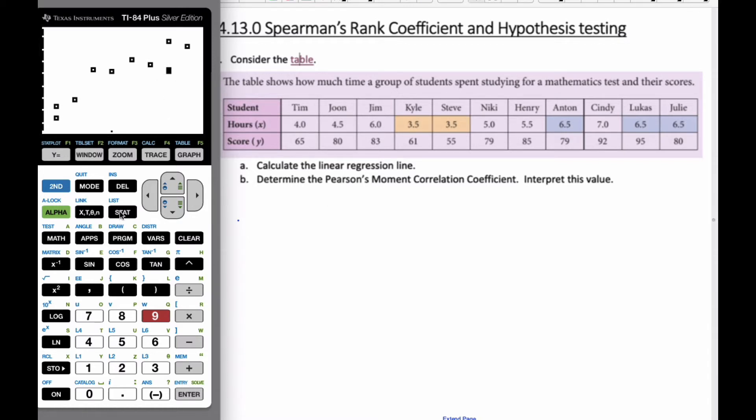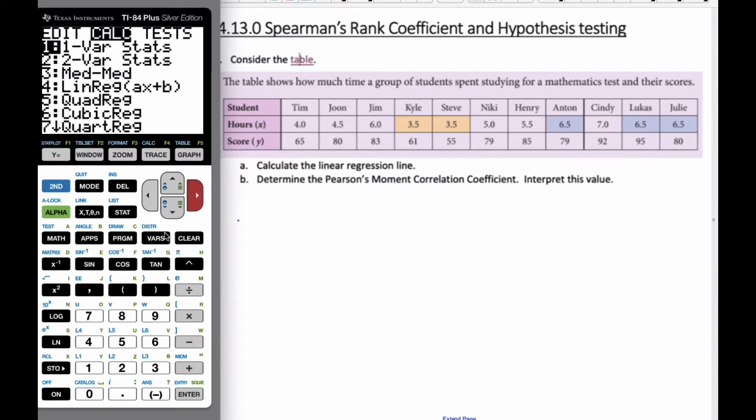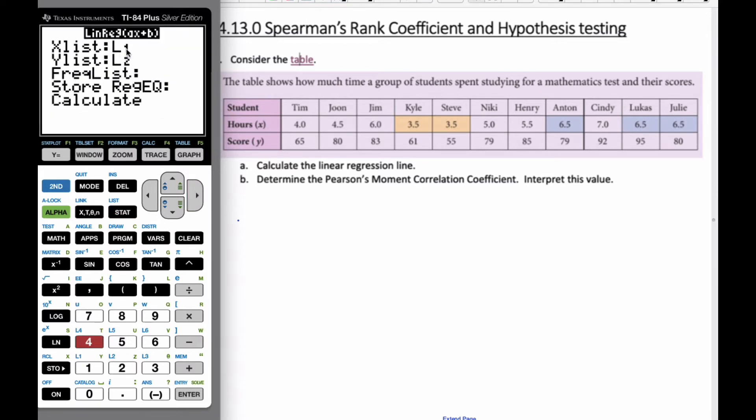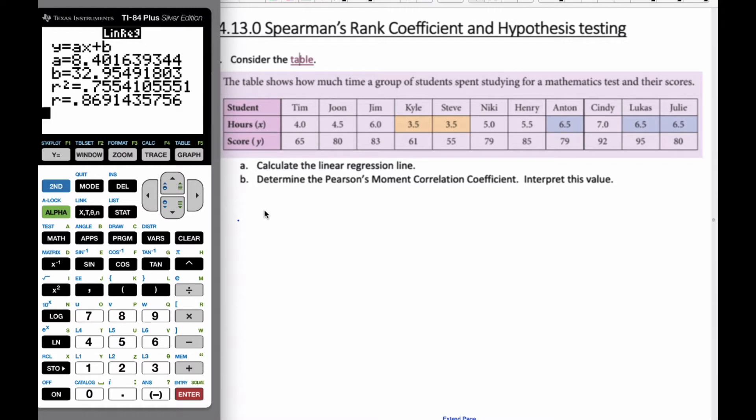Let's do our regression line. I'll go to statistics and calculate my regression line, number 4, x, y, and then I'll put the regression line into y1. I calculate it. My regression line is y equals 8.40x plus 33.0, just three significant figures, making sure you include the 0.0.